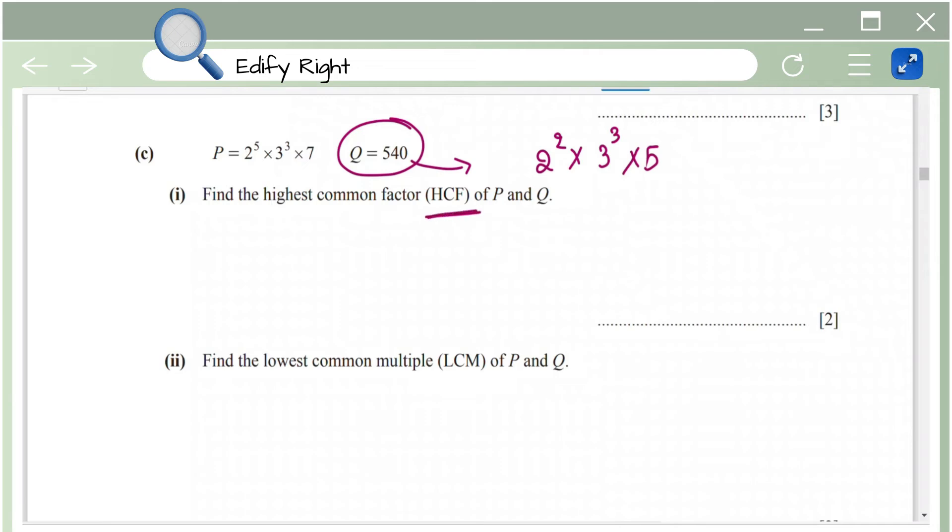So in order to find the HCF first just find whatever common factors you have in each of p and q. So here you have 2 and 2 here. So take the lowest power of 2. So we're going to take 2 power 2 and then you have 3 again in both the cases. Take the lowest power of 3. Here the power is same in both the cases. So we're just going to stick with 3 cube and then you have 7 and 5 which are not common. So we're not going to take those numbers. So basically your answer is 2 power 2 into 3 power 3 which is 108.